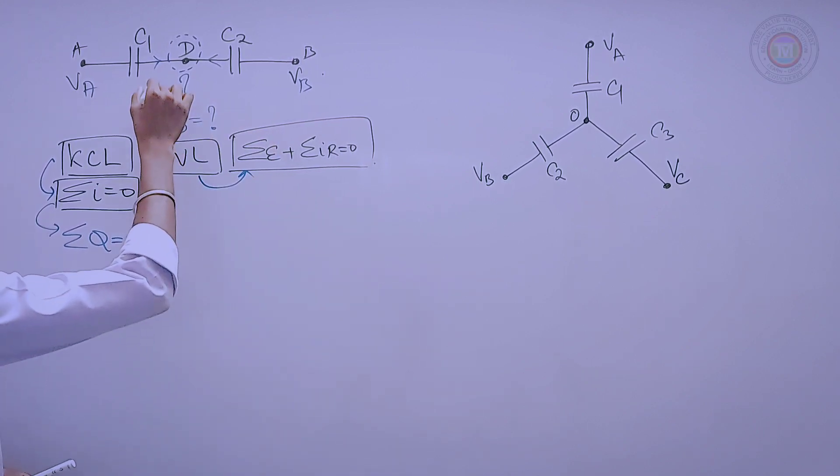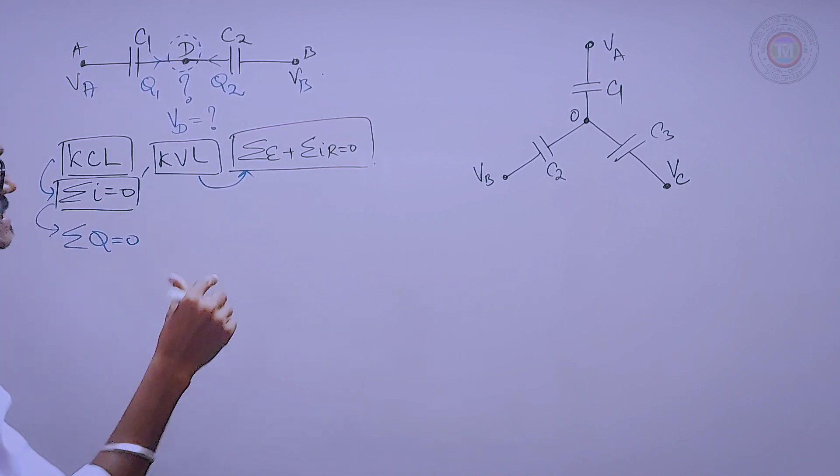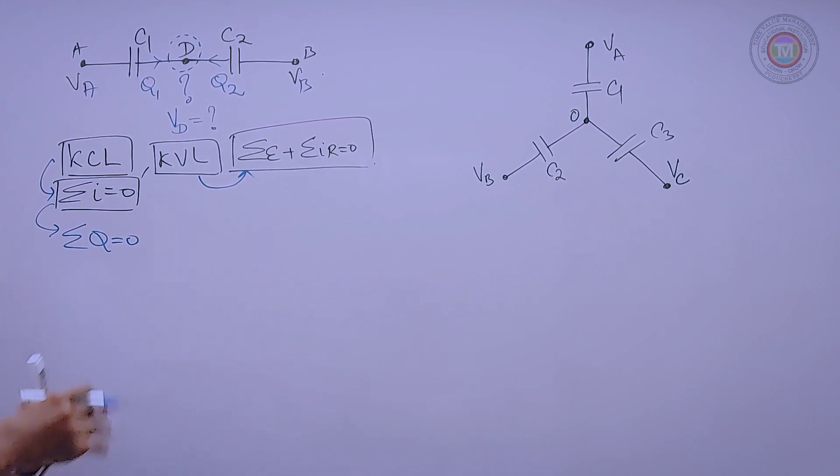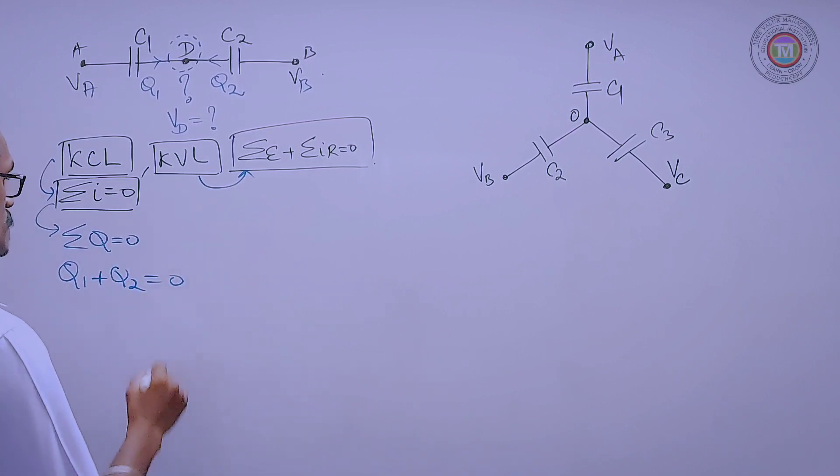Just for our convenience, this is Q1 and this is Q2, entering and leaving. Sum of the charges is Q1 plus Q2, it is said to be what? Zero.